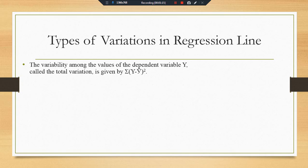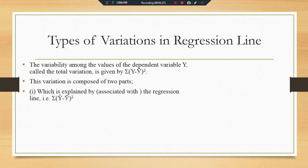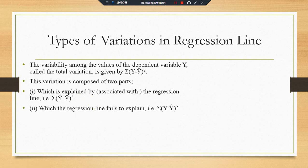The total variation can be further categorized into two types. Total variation has two sub-types: the first one is explained variation, which is associated with the independent variable effect — the variation that is explained by the regression line. The second sub-type of total variation is unexplained variation, which the regression line fails to explain.